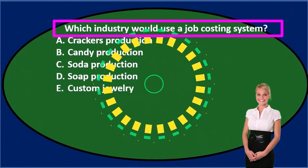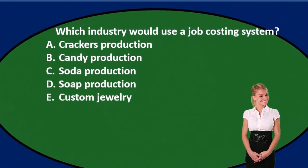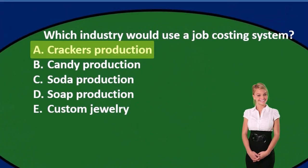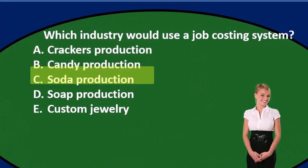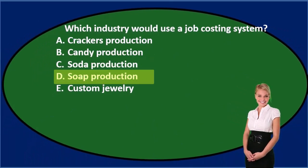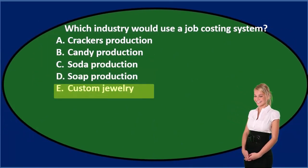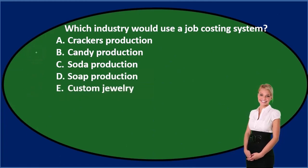Which industry would use a job cost system? A. Crackers production. B. Candy production. C. Soda production. D. Soap production. Or E. Custom jewelry. Let's go through this again using the process of elimination.